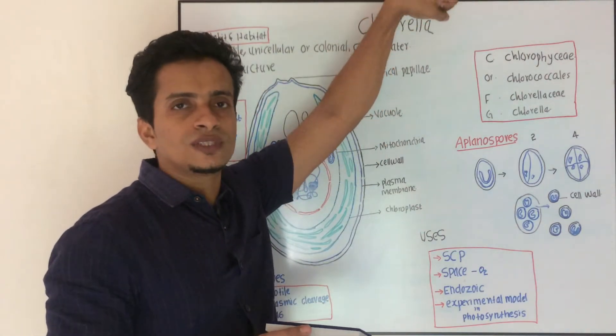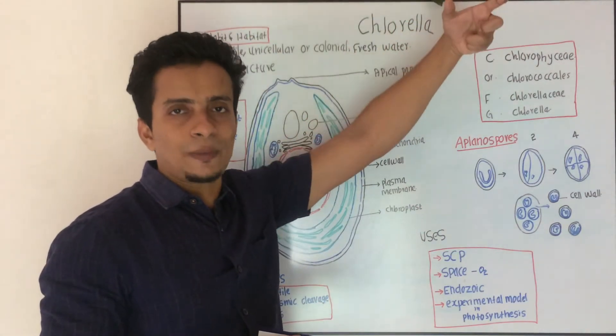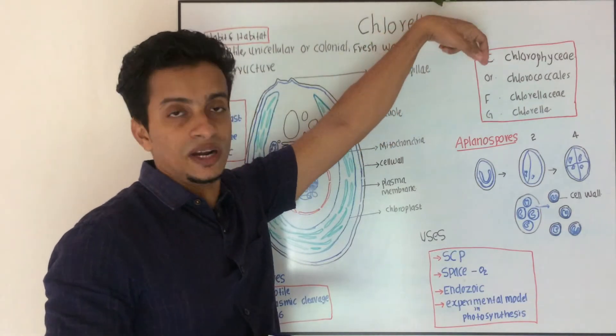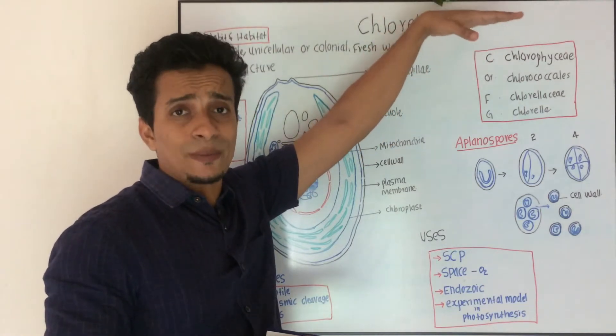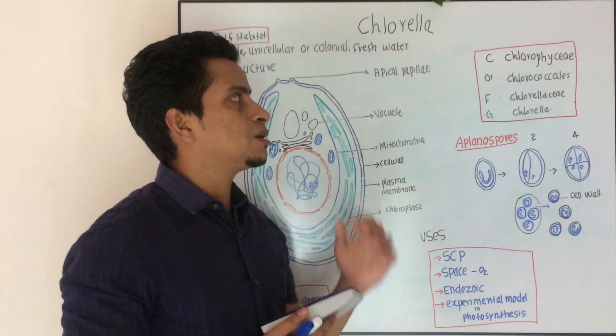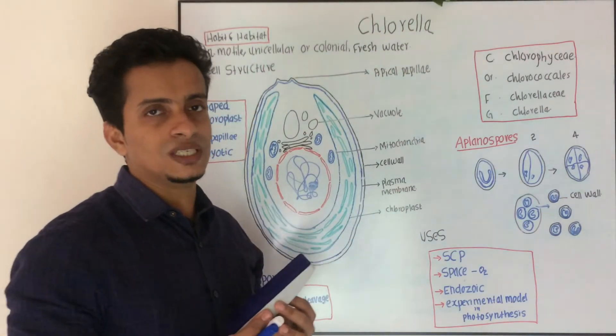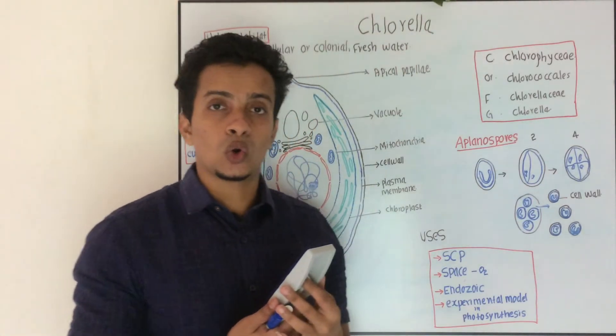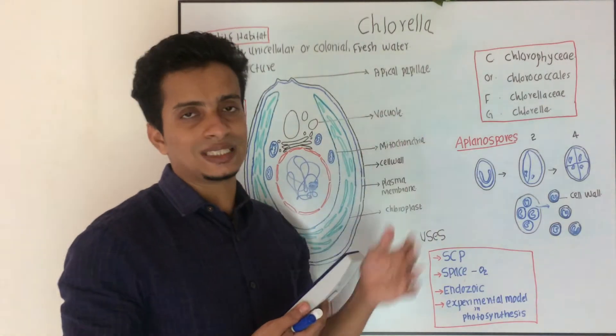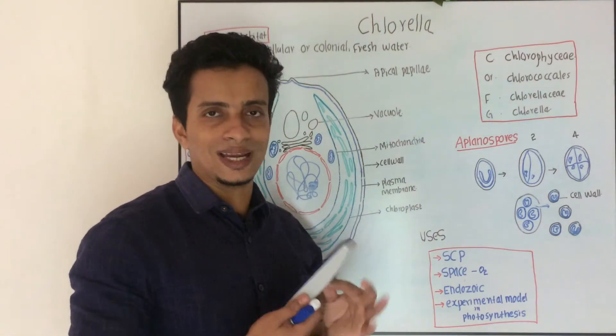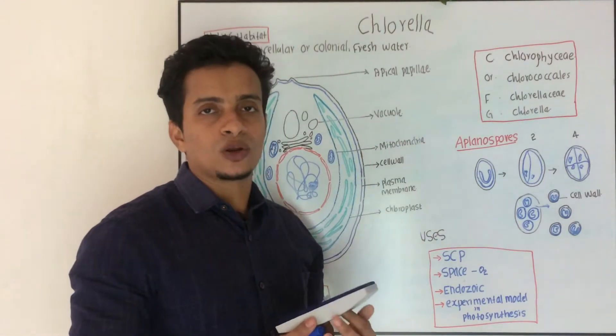Coming to Chlorella. First of all, how it is systematically or taxonomically divided? This is the systematic position. It comes under Chlorophyceae, order Chlorococcales according to Fritsch. Fritsch's classification of Chlorococcales. Then family Chlorellaceae, genus Chlorella.